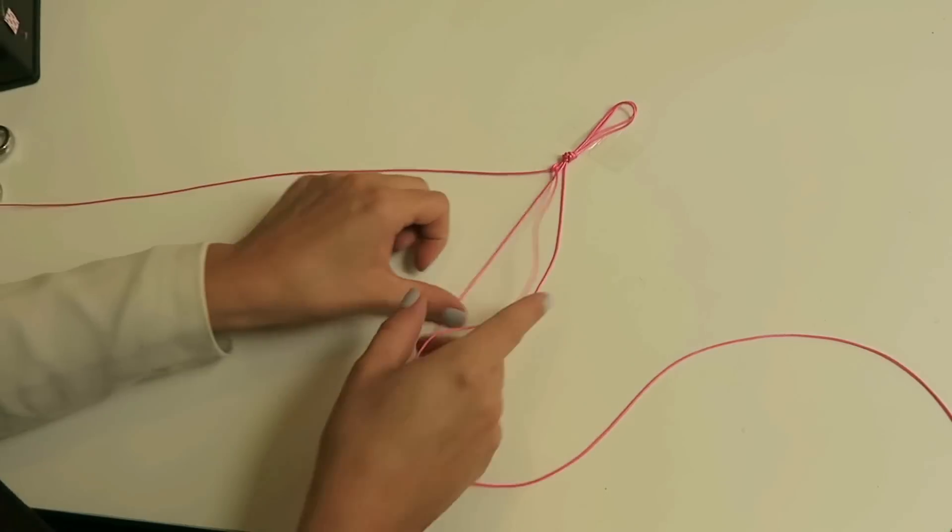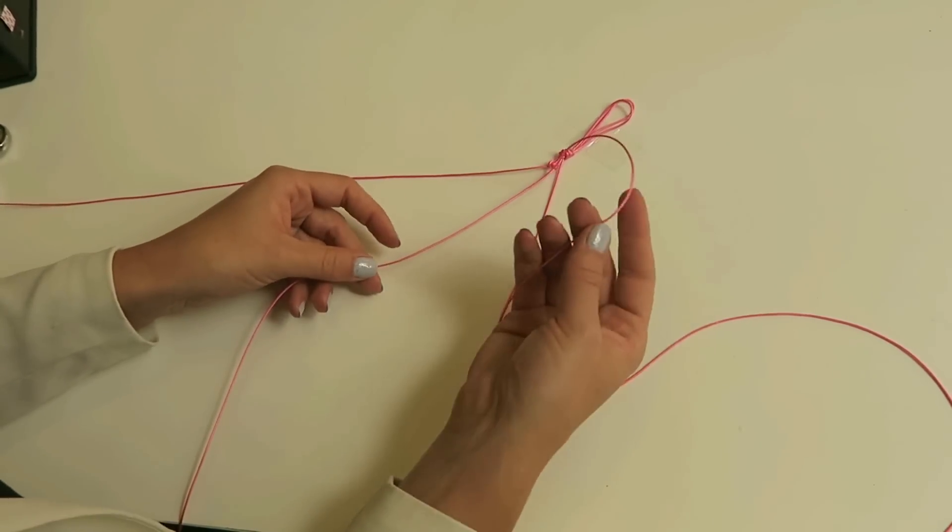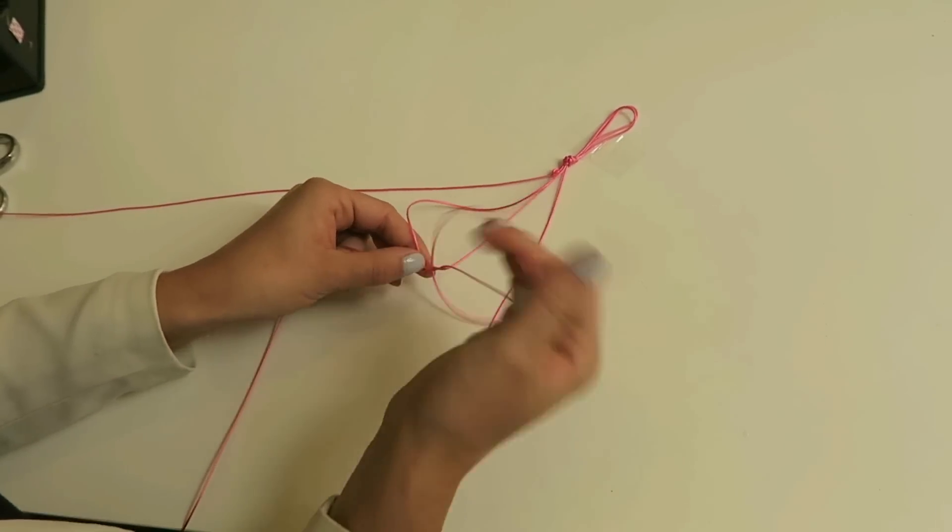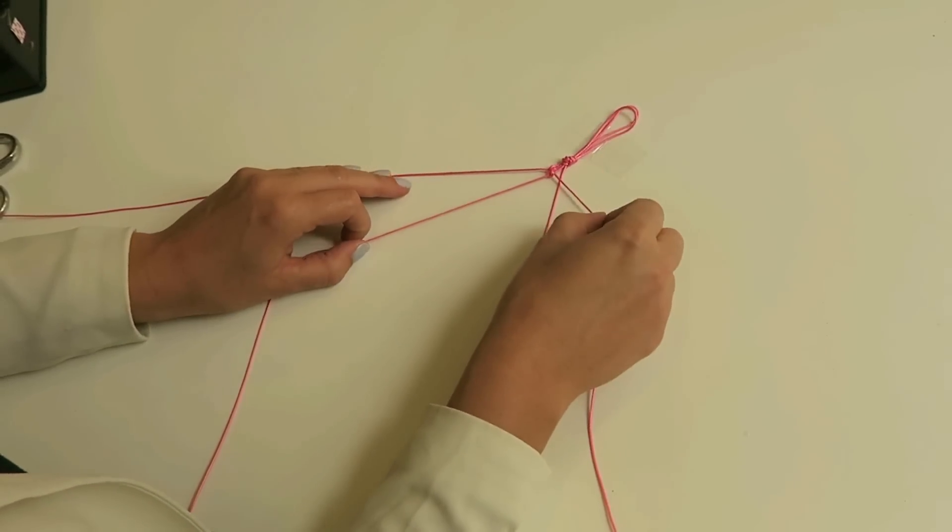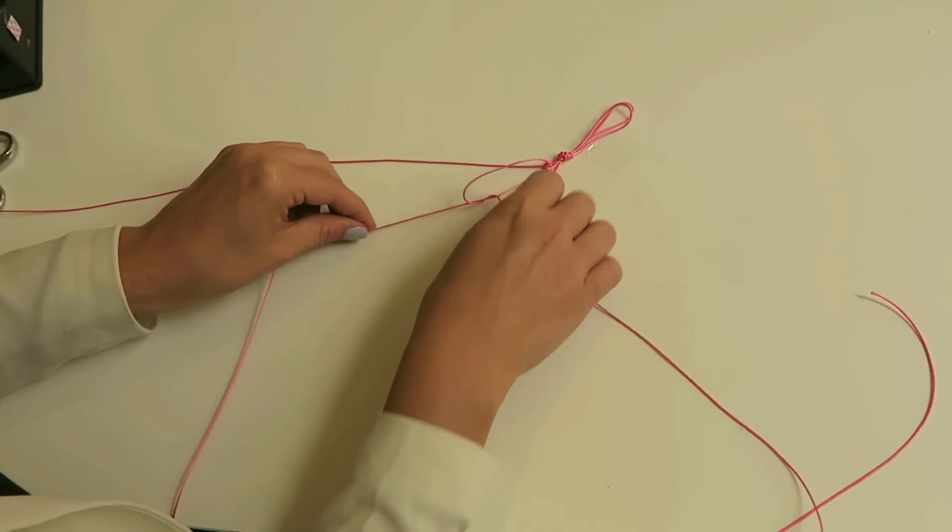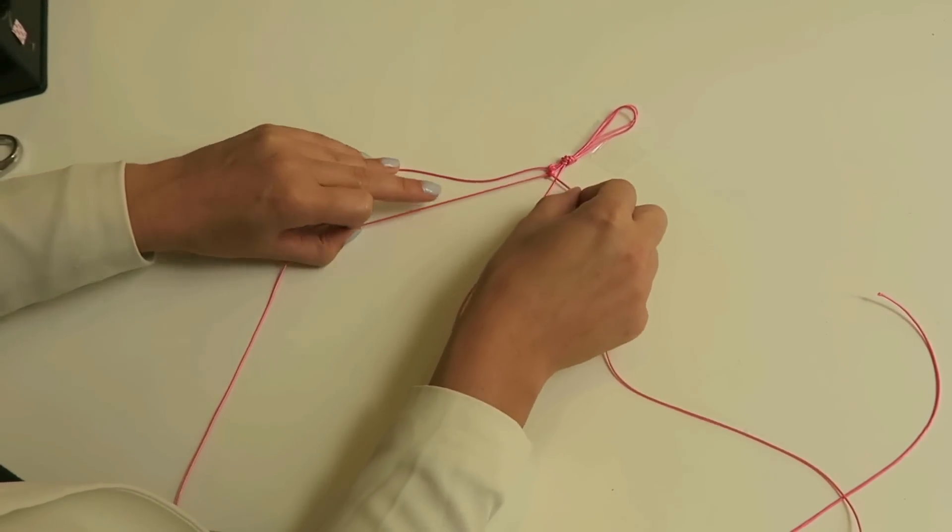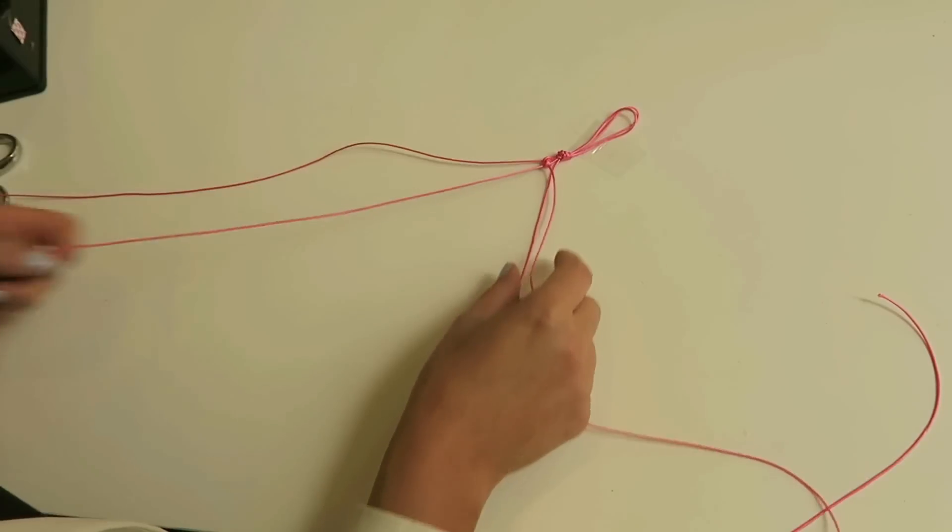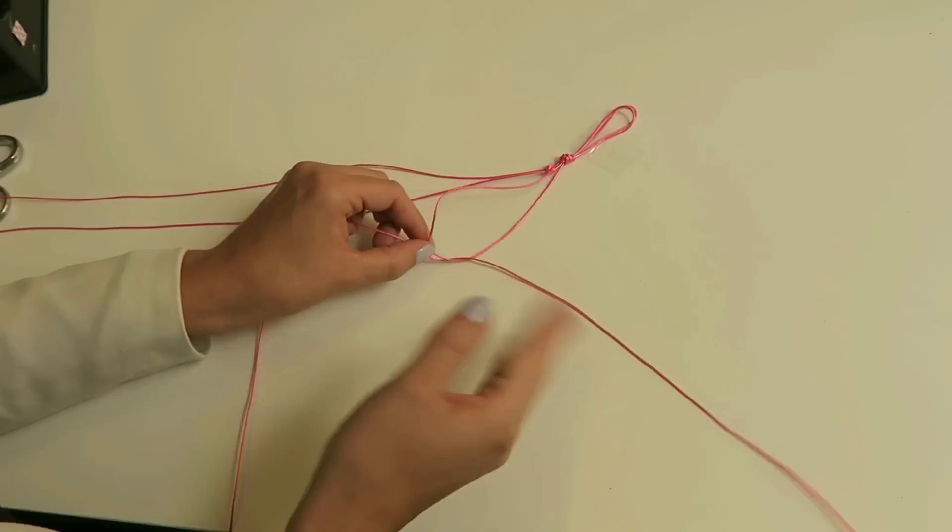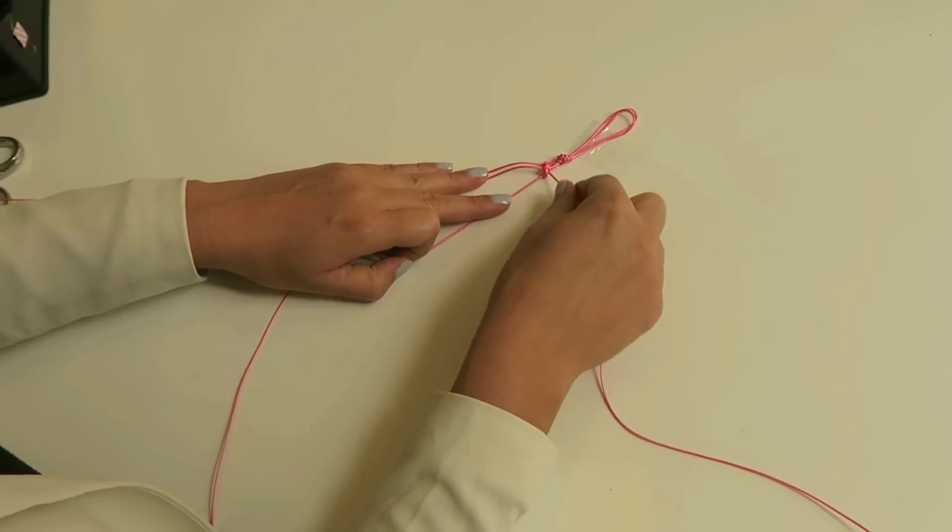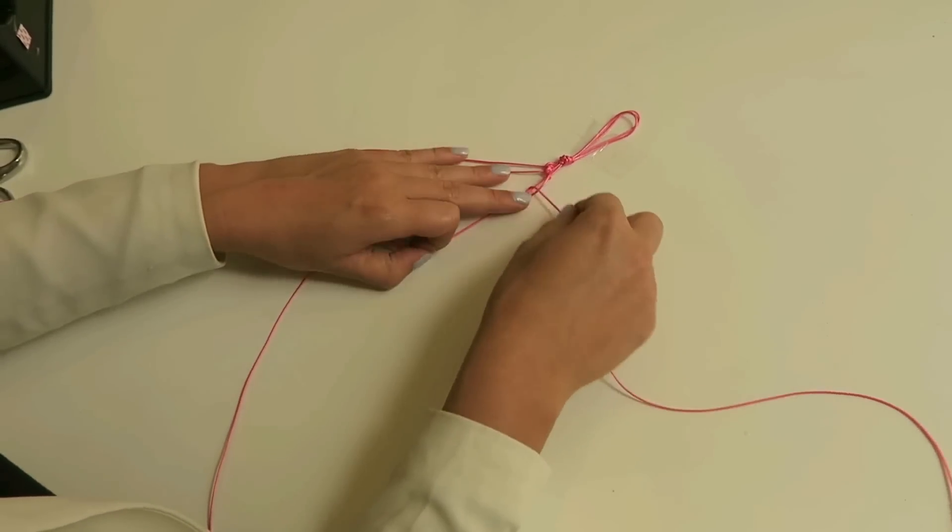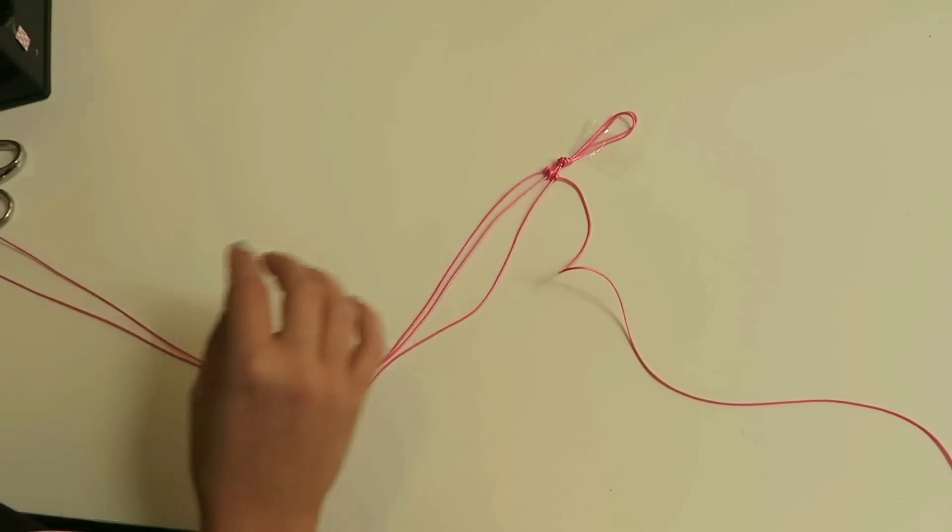And then you're gonna take the next cord and make two knots. So you continue on making the knots with the same strand. Put it over, under, and make the knot. So that's one, and then two. And then you're gonna take the last strand and also make two knots. Like this, so this is your first row.